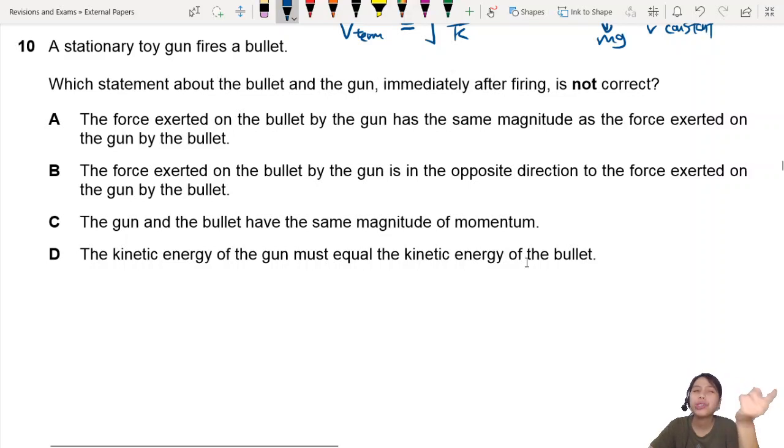We come into chapter 4. A stationary toy gun fires a bullet. What statement about the bullet and the gun immediately after firing is not correct?